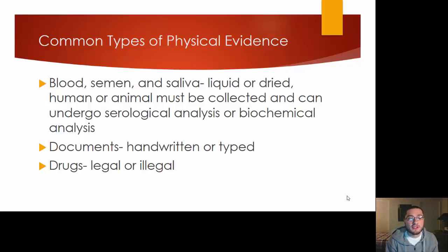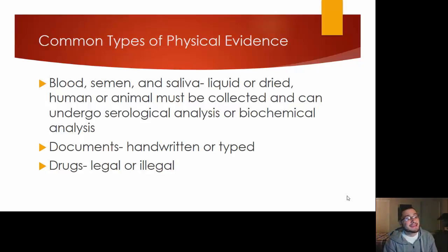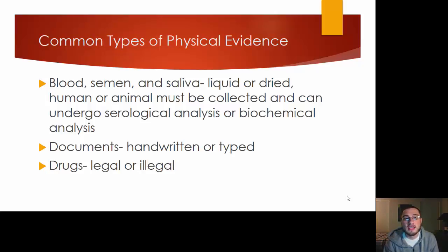Some types of physical evidence: blood, semen, and saliva are important because you can get DNA from them. DNA is the big breakthrough we've had in recent decades. When we talk about class evidence versus individual evidence, DNA is the best individual evidence because without a doubt, if it matches another person's DNA, that's the same DNA from the same person. The chances of someone else having the exact same DNA are so slim we can consider it impossible.